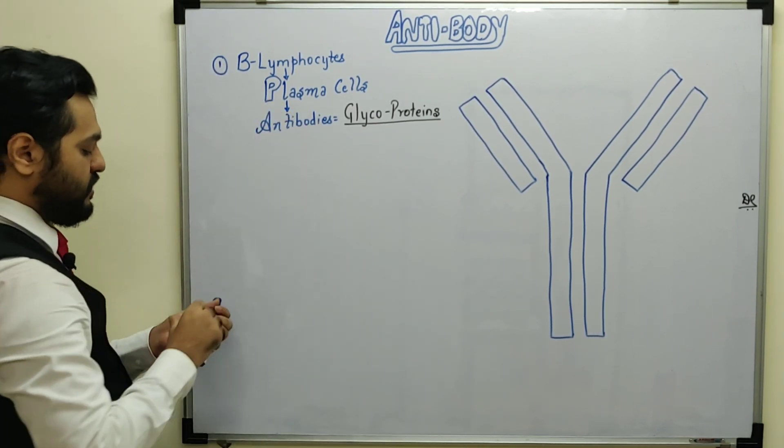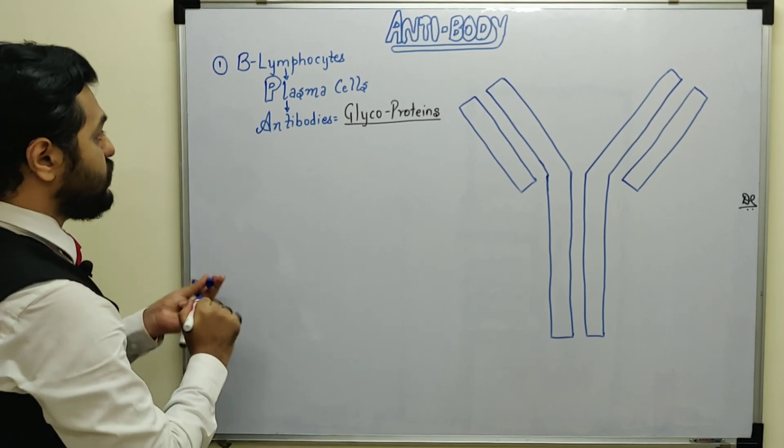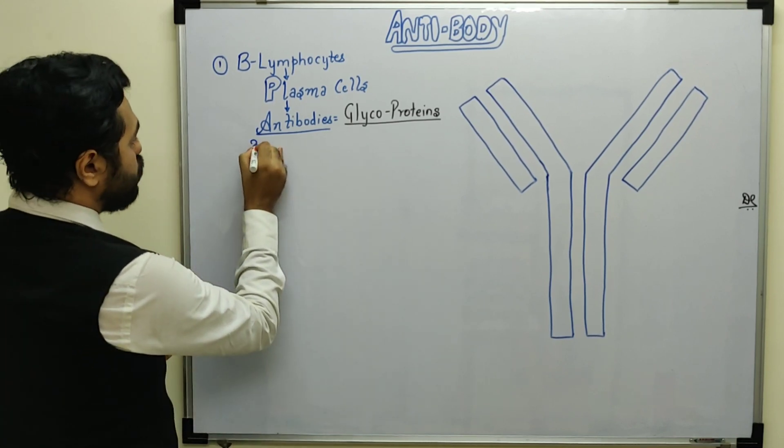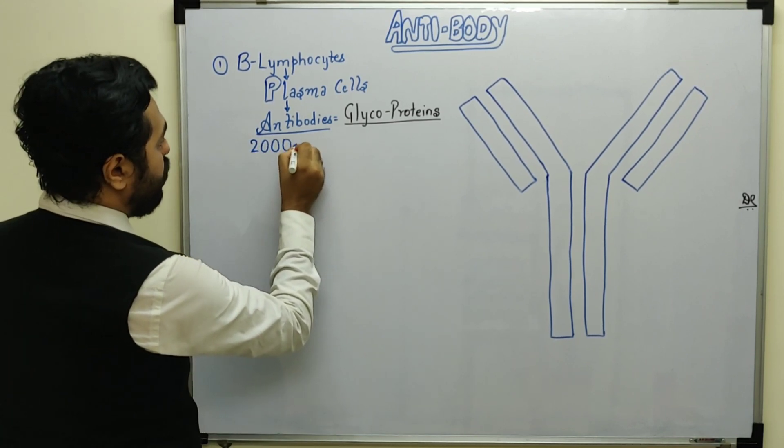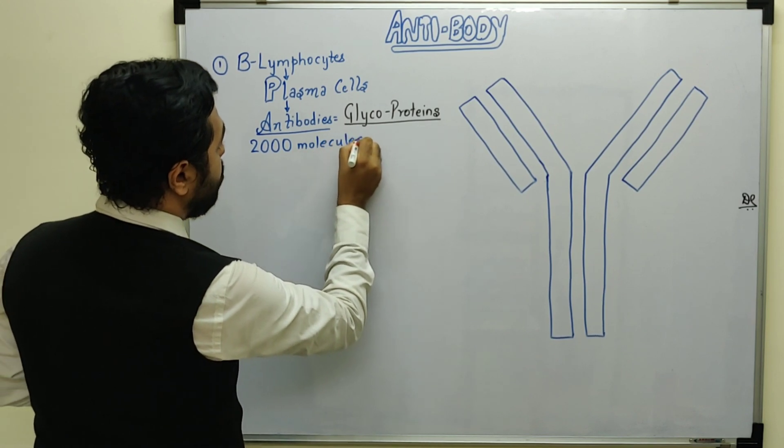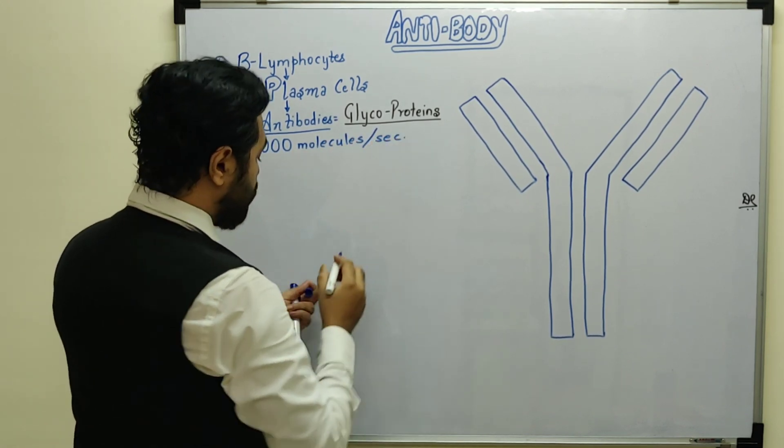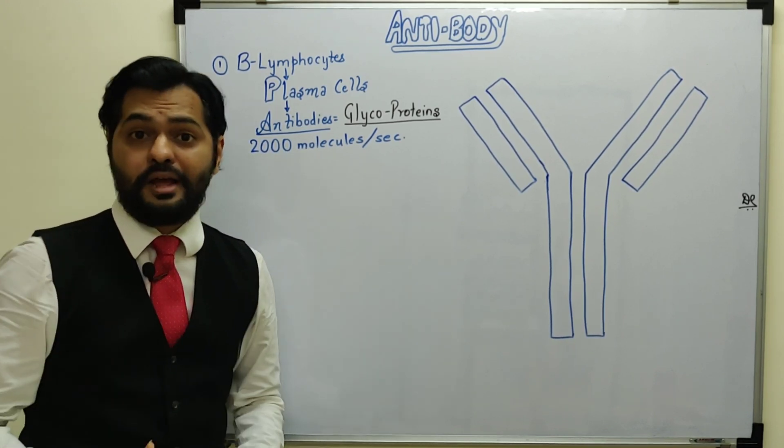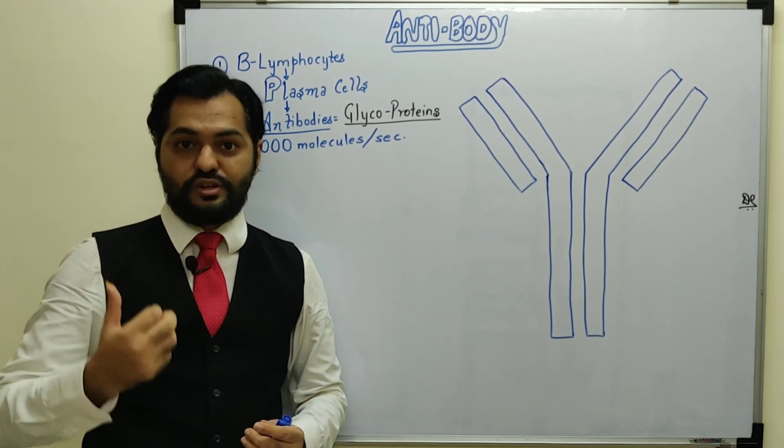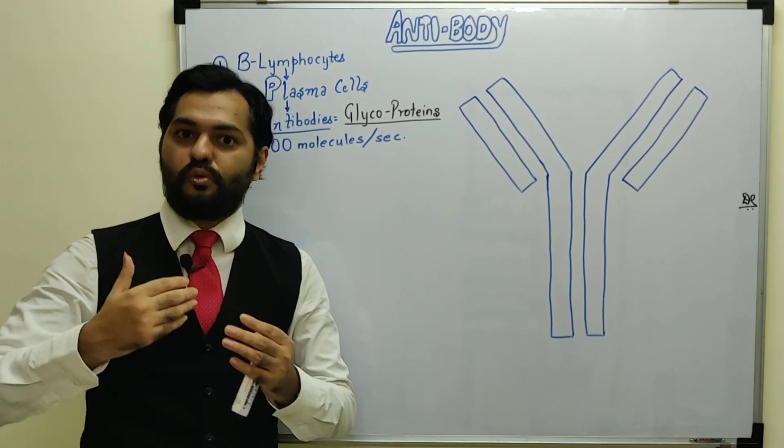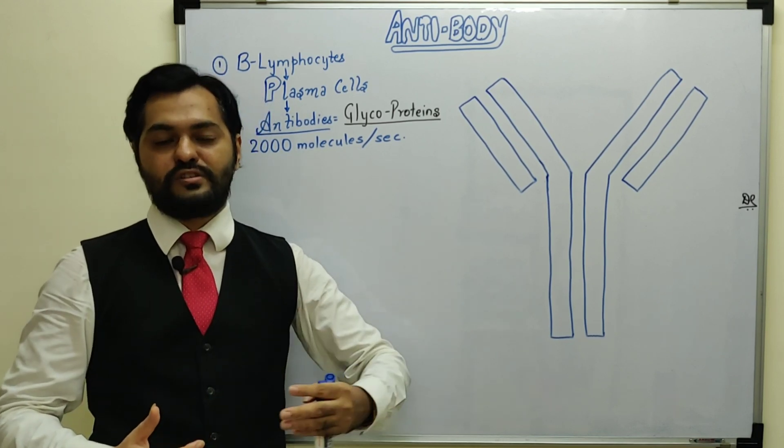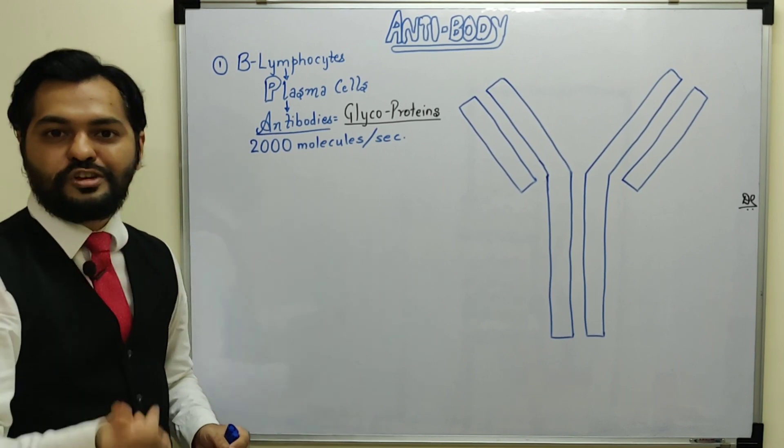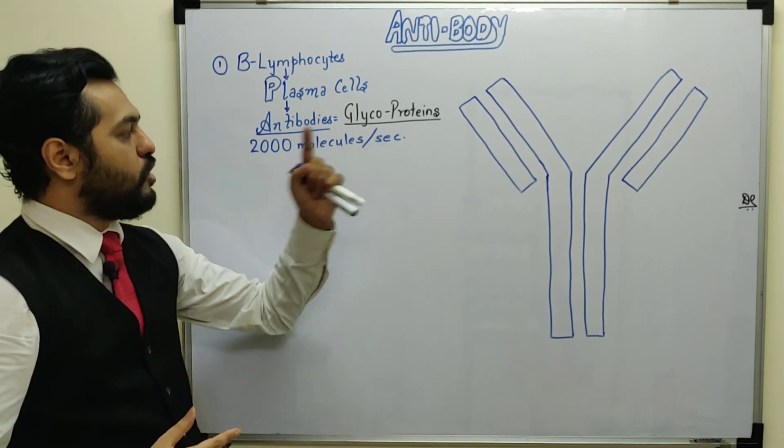One more important feature is that antibody production against a specific antigen occurs at the rate of 2000 molecules per second. You can appreciate that our body produces defense molecules at great speed, because pathogens like bacteria also have fast replication through binary fission. That is why our defense system is very active, producing 2000 molecules per second.